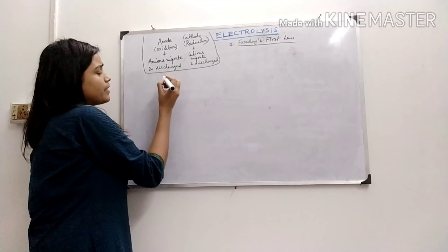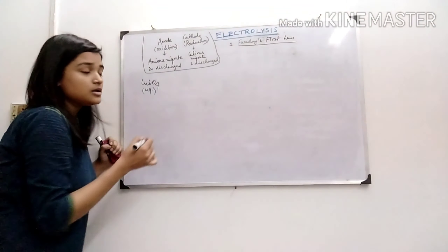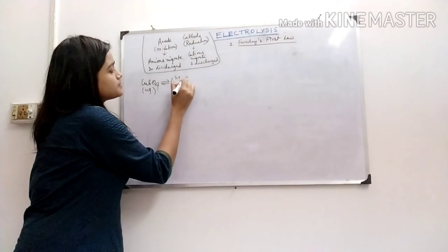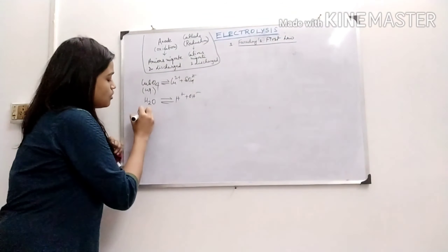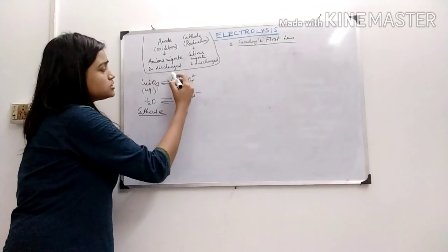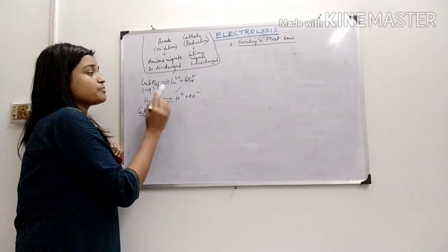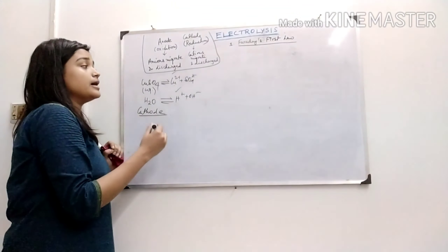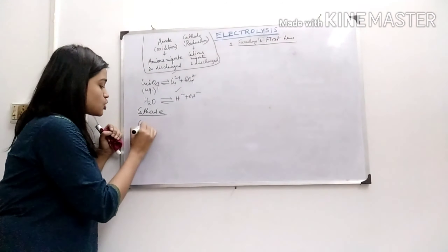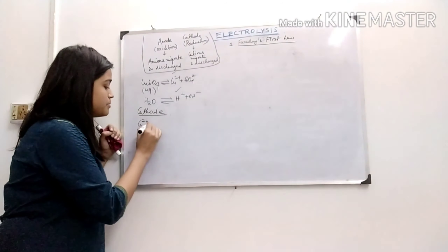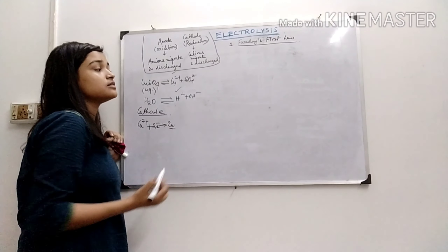For example, suppose we take copper sulphate solution. Since it is an aqueous solution, at the cathode both Cu²⁺ and H⁺ are cations, so both will migrate towards the cathode. But the element which has a higher standard reduction potential will be discharged at the cathode. Copper has a positive potential value, so it will be reduced and deposited on the surface of the cathode.